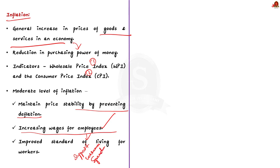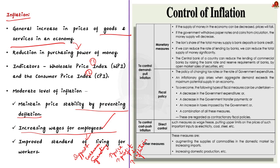Moderate inflation means businesses will raise their prices, earn higher profits and invest more than usual. So moderate inflation is necessary. But too much inflation will have an impact on the common man. So governments generally try to keep inflation within an optimal range that promotes growth without drastically reducing the purchasing power of the currency. There are many methods used to control inflation — you can pause the video and go through them.